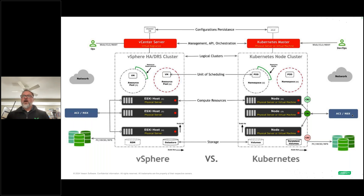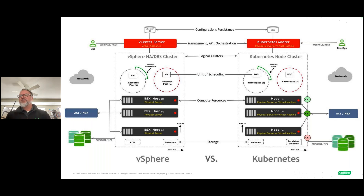A question came in: since Kasten takes a namespace-based mobility approach, can it move VMs only to a destination where KubeVirt exists? Yes, that is correct — we don't bring KubeVirt with us, it needs to be there beforehand. And to preempt the follow-up: no, we cannot go from one KubeVirt version to another — we go from Harvester to Harvester. There are far better tools for VM migrations between platforms.